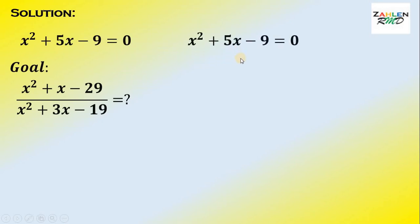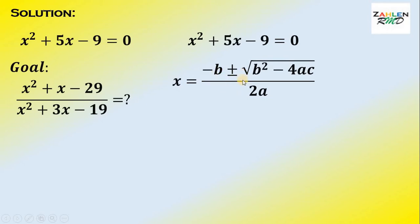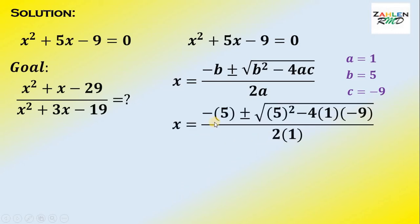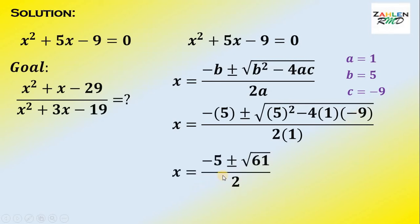But what if we try to solve this equation? To solve it, we use the quadratic formula: negative b plus or minus square root of b squared minus 4ac, all over 2a. Here, a equals 1, b equals 5, and c equals negative 9. Substituting, we get x equals negative 5 plus or minus square root of 61, all over 2.